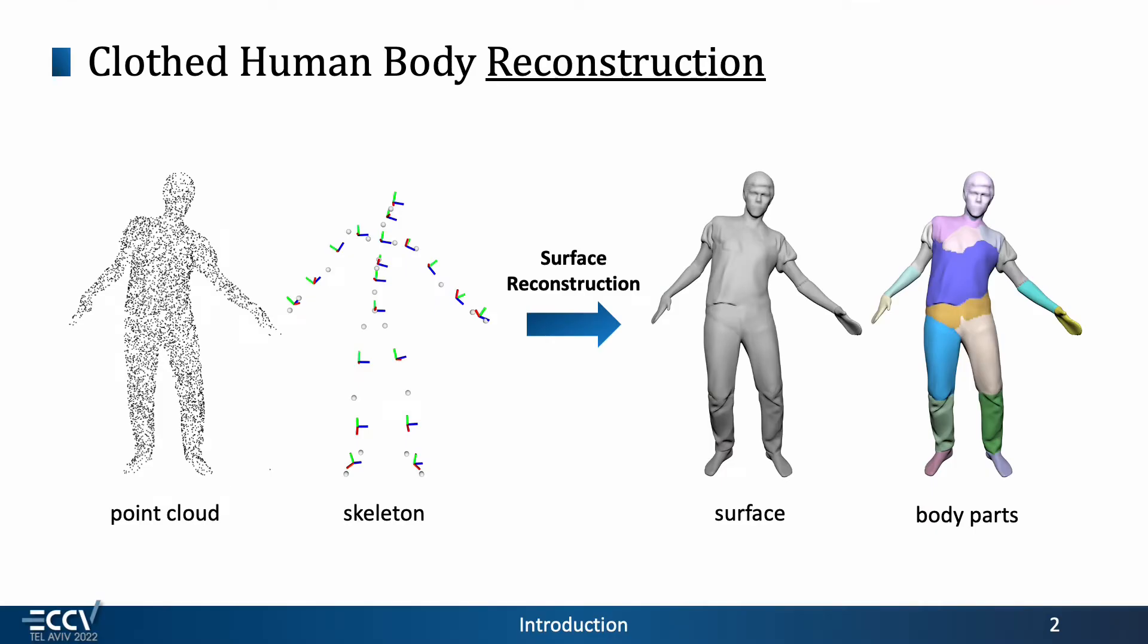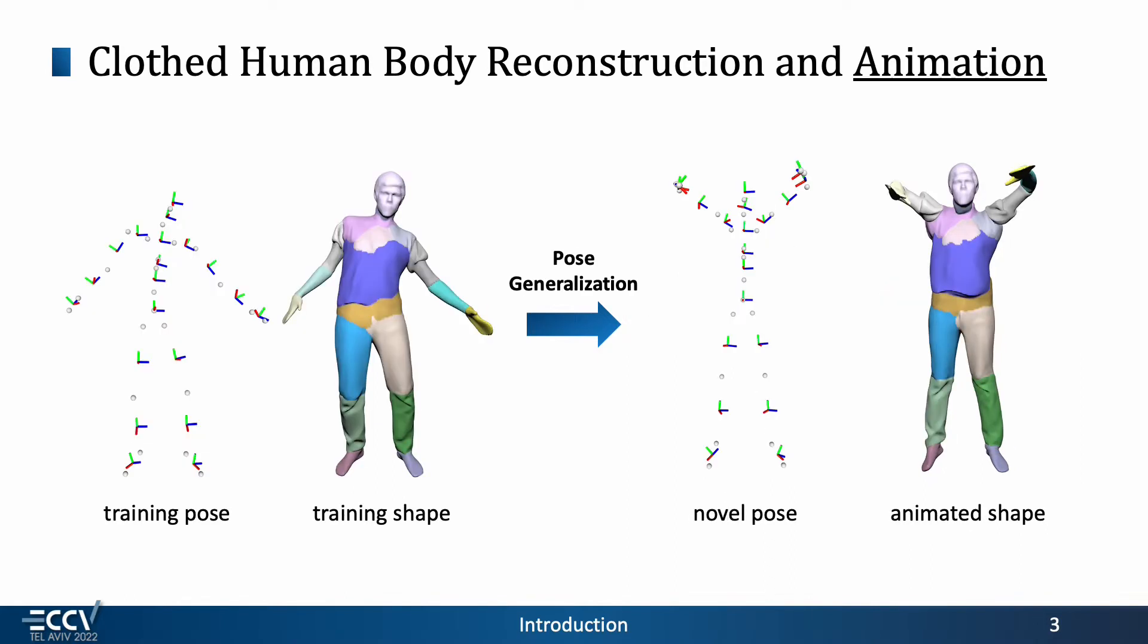We reconstruct the shape of a clothed human from a sequence of point clouds and skeletons in a part-based manner. Then, we can animate the reconstructed person into novel poses by manipulating the skeleton.